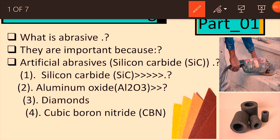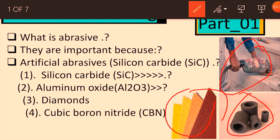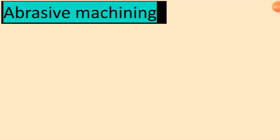These are abrasive devices. This is a sandpaper — we call it a wari paper — and this is a stone used to sharpen a knife or other tools for cutting. These are examples of abrasives.